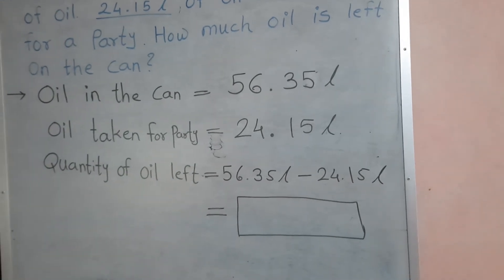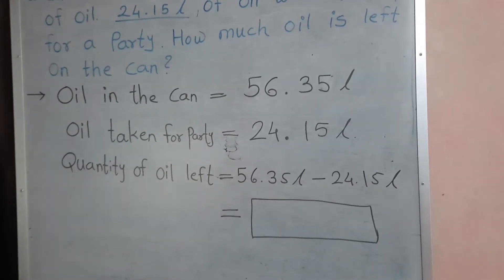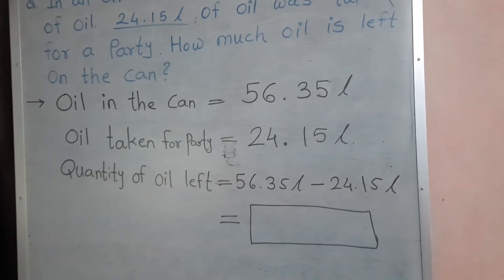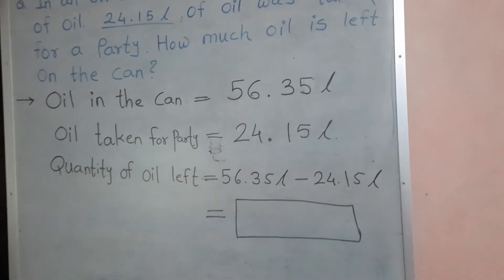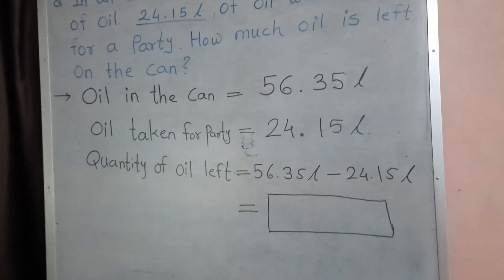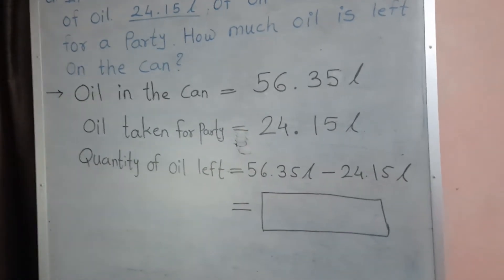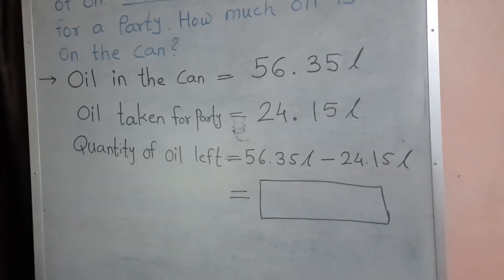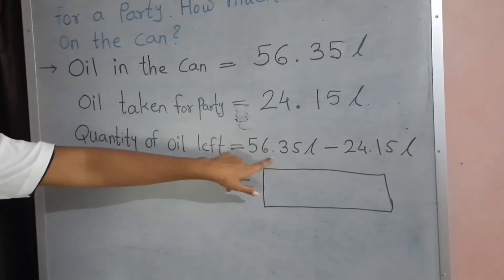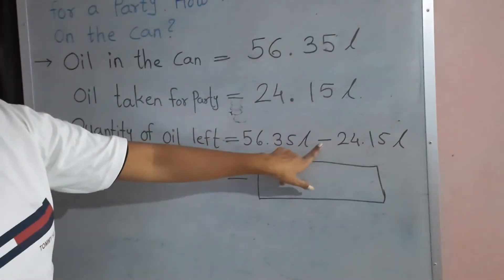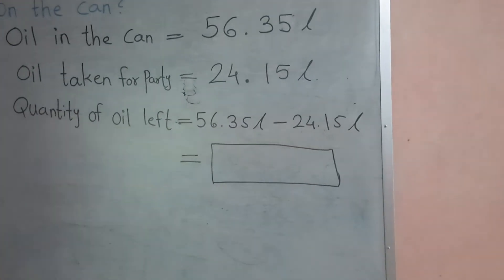So, we just subtract that. That 24.15 litre, we just subtract. On which number? 56.35 litre. So, look at here. 56.35 litre minus 24.15 litre.